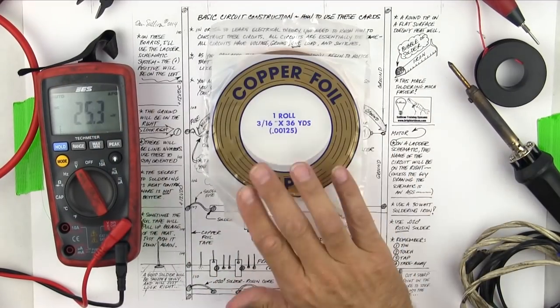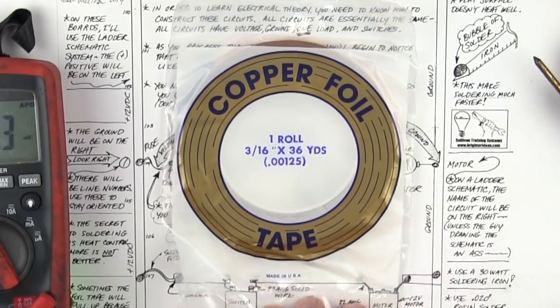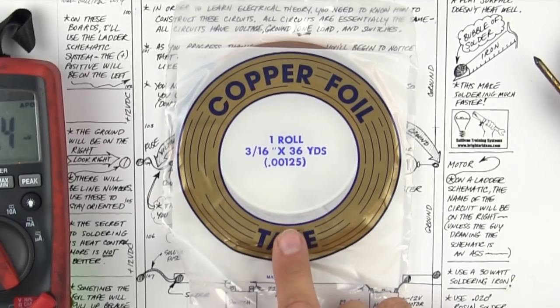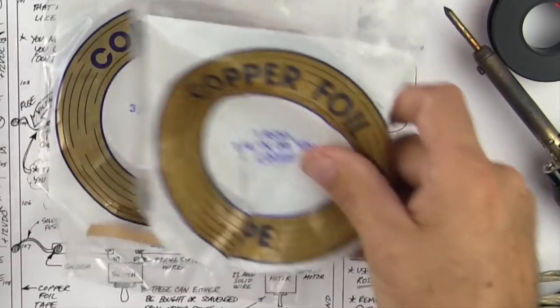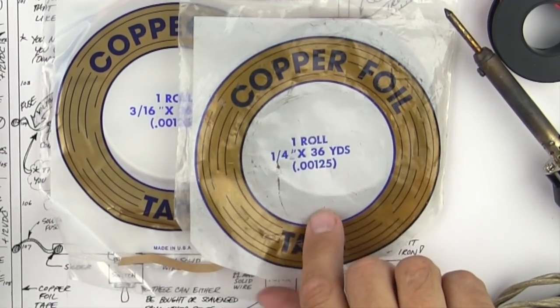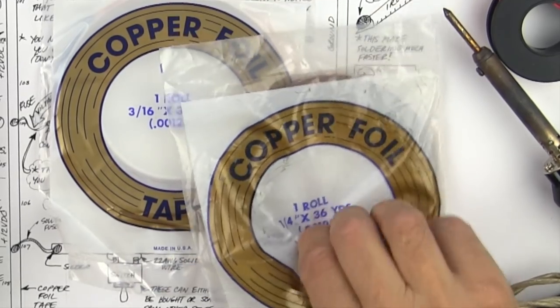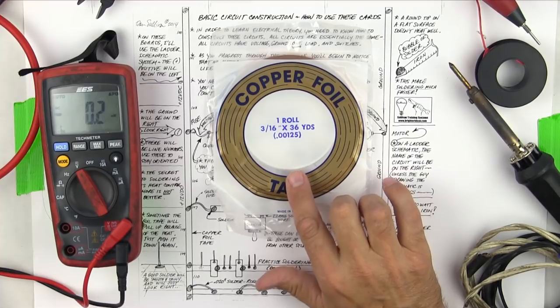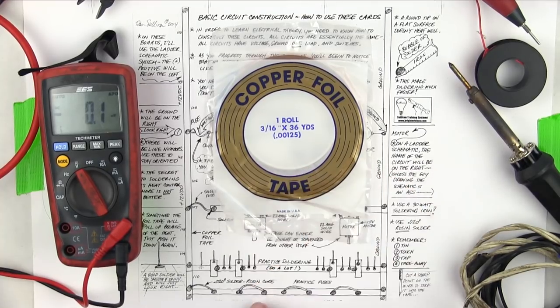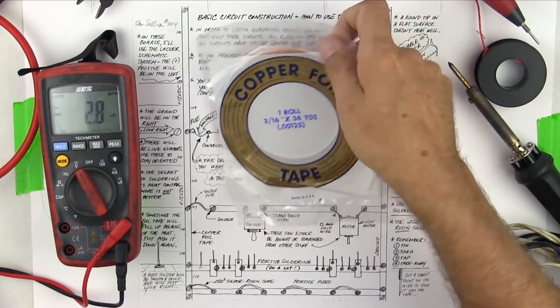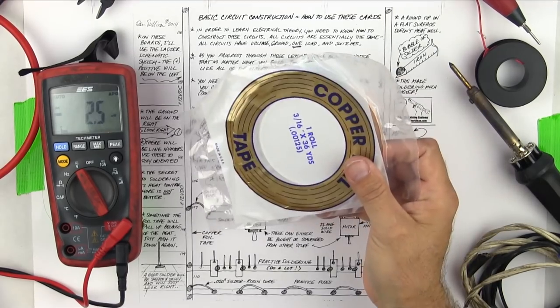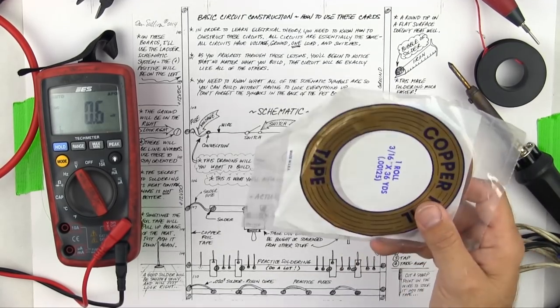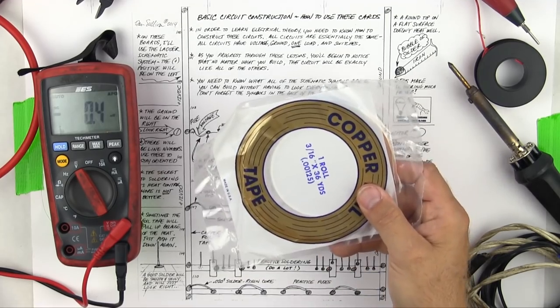The copper foil tape is available all over the place. Stained glass window suppliers are the best place to get it. This is quarter inch, which is fine, and then also there's three-sixteenths, and they're both basically the same price. Both of them will work—I think maybe the three-sixteenths would be a little better, it'll fit these cards a little bit better. But either way, they're both okay. This is one roll—it's more than enough for all of this. So you don't need to spend more than five bucks on this if you can find this stuff locally.